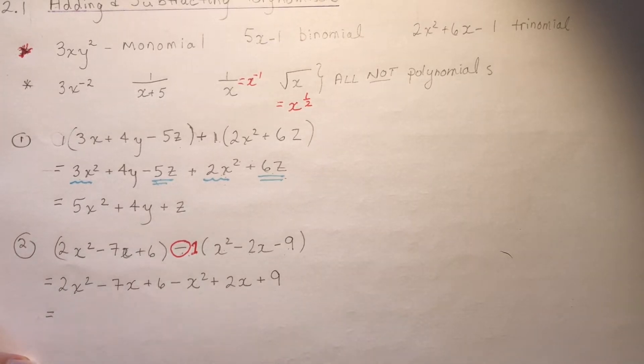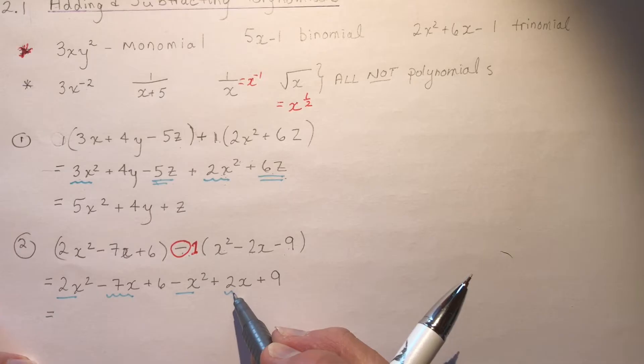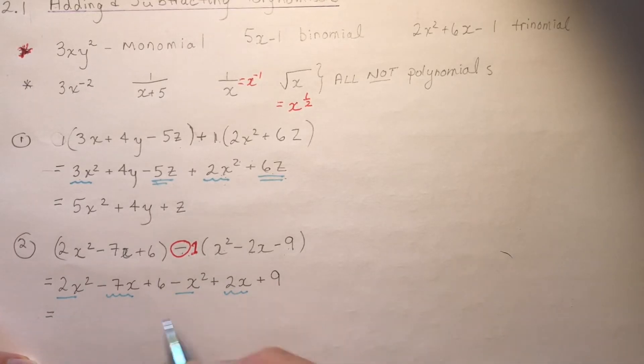So now I gather like terms again. Let's underline them. So I have a 2X squared and a minus X squared. And I've got this one and this one. If you tend to make little mistakes like that, it's a really good idea to get a colored pencil or a highlighter or something and just make sure that you don't mix up your terms. So my X squareds, 2 minus 1 is just 1. Minus 7 plus 2 is minus 5. And 6 plus 9 is 15. And there you go.